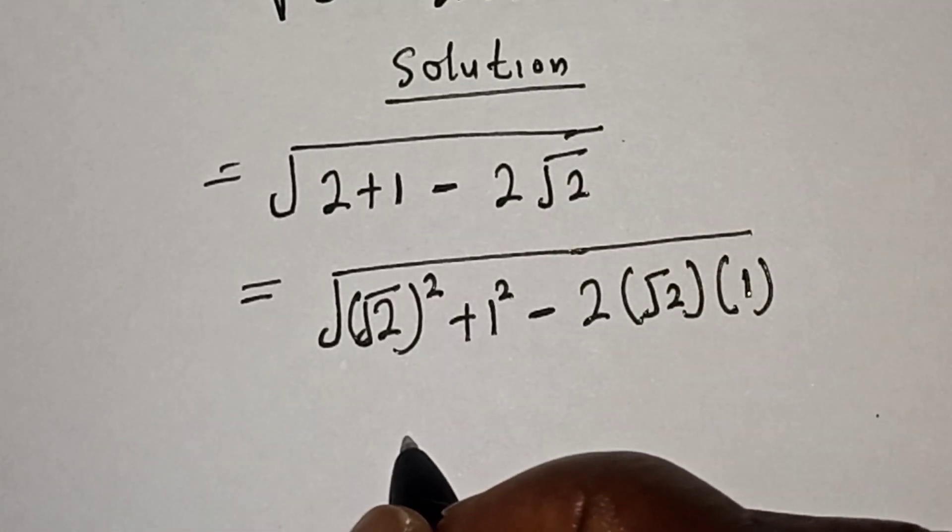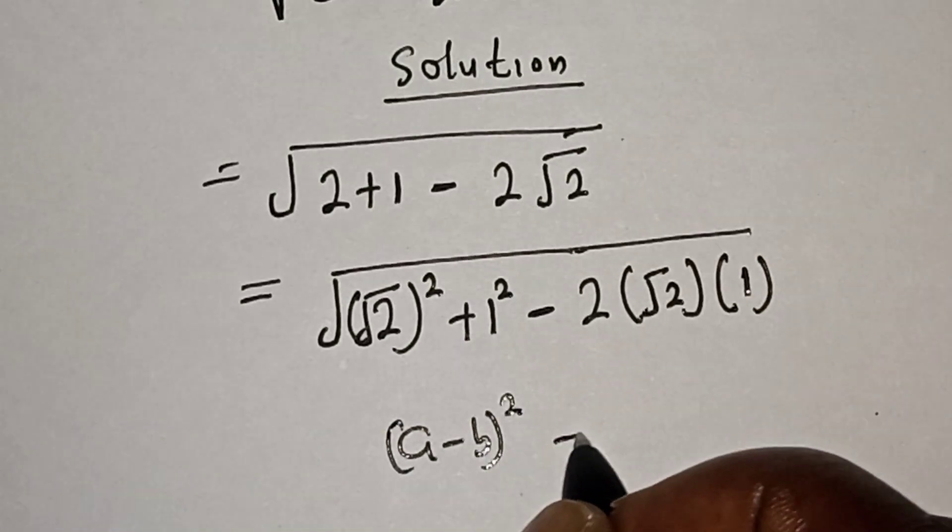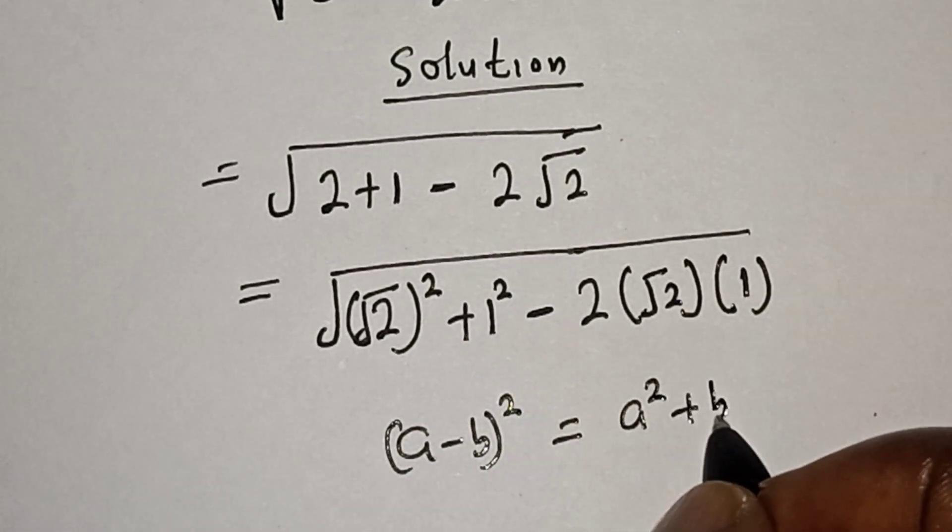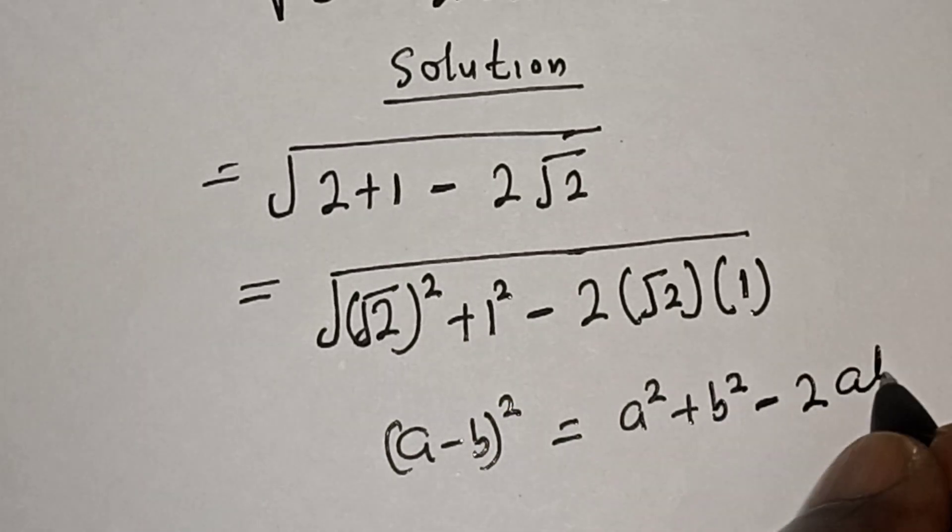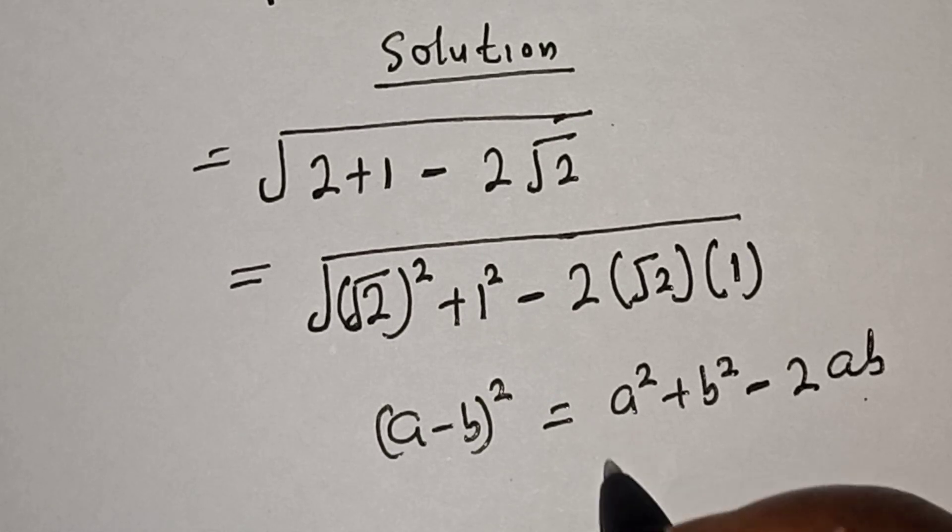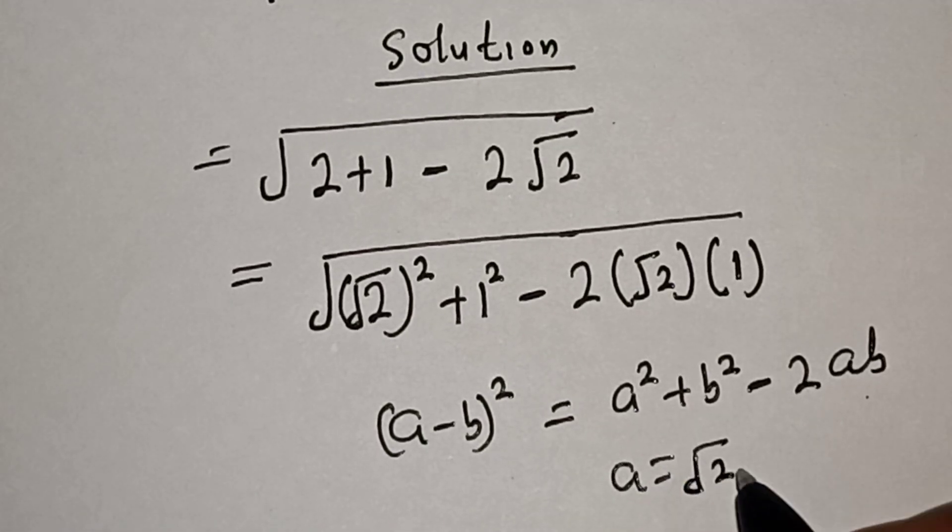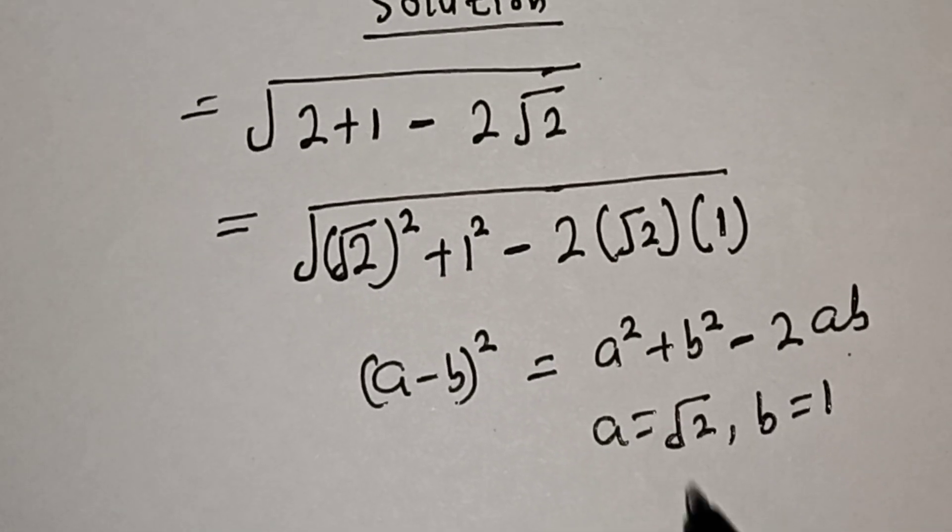Using the rule that (a minus b)² equals a² plus b² minus 2ab, and in this case a equals √2 and b equals 1.